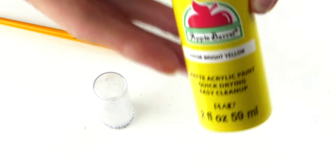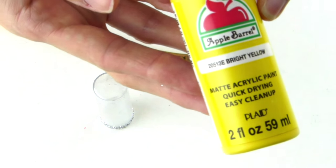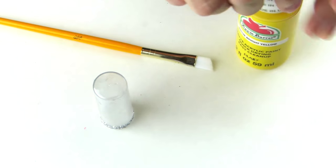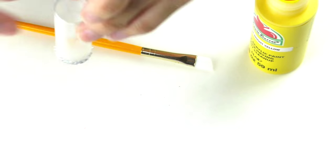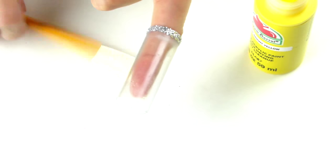Now you will want to get out some yellow paint. I used a bright yellow matte acrylic paint and you are just going to paint the clear top part of your container yellow.